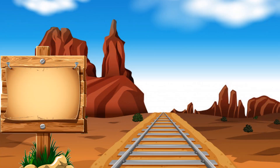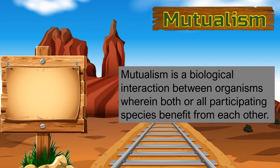One of the most common relationships is mutualism. It is a biological interaction between organisms wherein both or all participating species benefit from each other. This is a give and take relationship. Both organisms give something and receive something in return. Ang mutualism ay isang uri ng ecological relationship kung saan ang mga organismo ay parehas na nagbibigay at may tinatanggap sa bawat isa. Parehas na may nakukuhang benepisyo sa kanilang pakikipaghalobilo sa bawat isa.